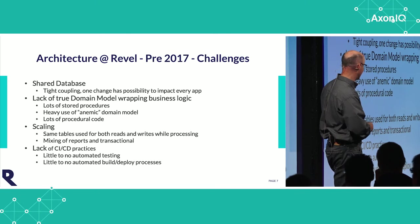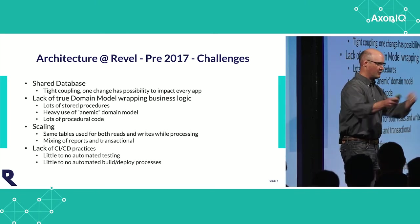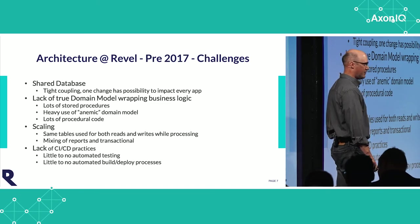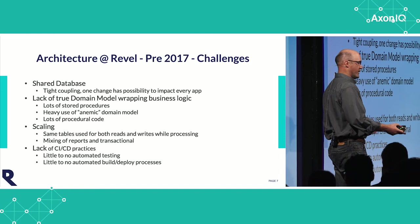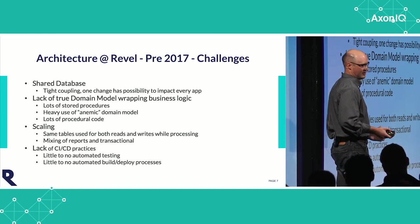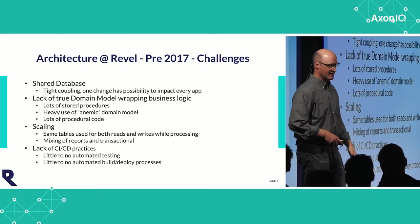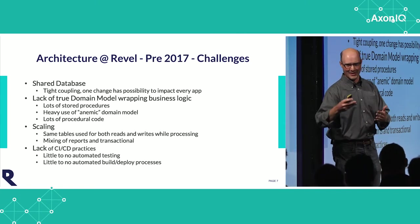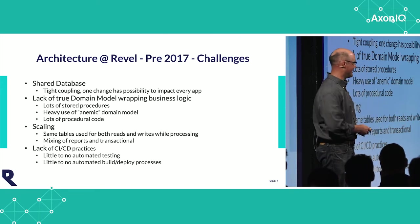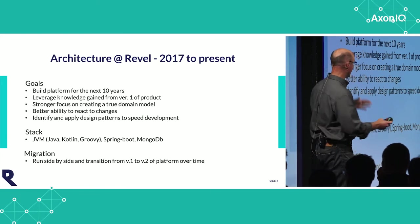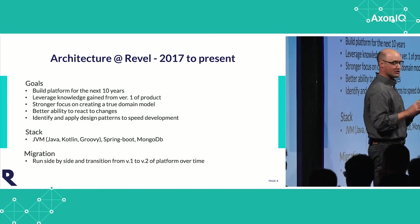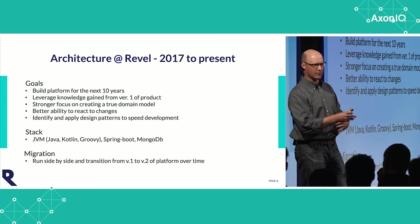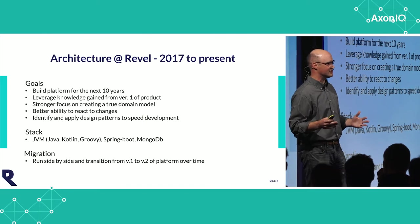Lots of stored procs, heavy use of that anemic domain model — we'd load data up as basically a bag of data and throw it around the system. Lots of procedural code. Scaling challenges. When I first arrived, we didn't have anything really in the way of CI/CD practices for deploying things. A lot of what this did was set the stage for recognizing this is not going to work to try to grow this company to where we want to take it. We decided we're going to try to go to microservices. The one thing we did get out of all that is we really knew our domain on paper — it just wasn't expressed in code and we couldn't easily run data through an analytical engine.